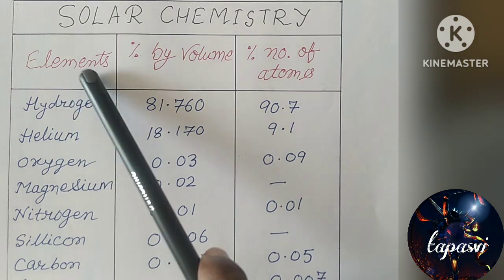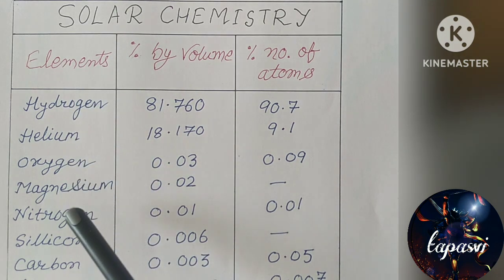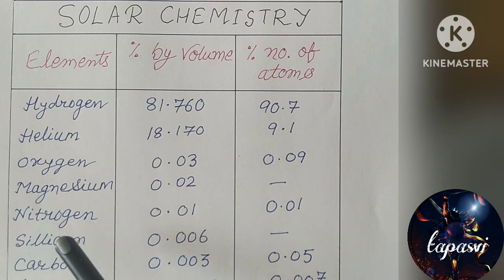The elements are hydrogen, helium, oxygen, magnesium, nitrogen, carbon, and iron.